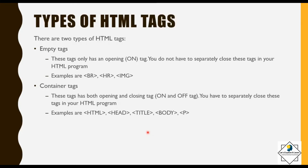There are two types of HTML tags. The first is the empty tag. These tags only have an opening tag; you do not have to separately close them in your HTML program. Examples are BR, HR, and the image tag. The second type is the container tag. These tags have both opening and closing tags. You have to separately close these tags. Examples are HTML, head, title, body, and the paragraph tag.